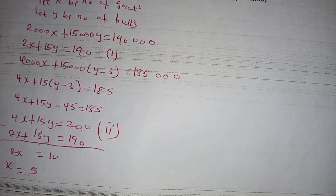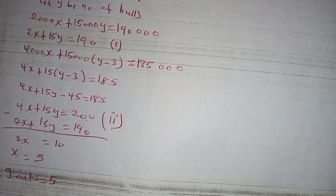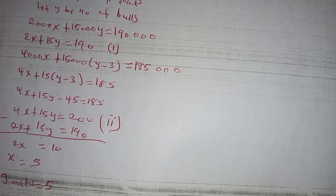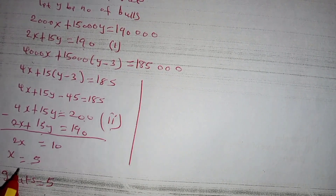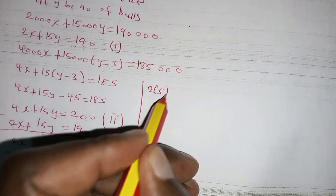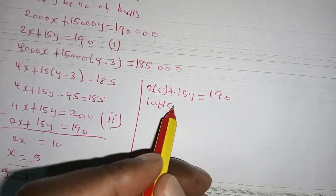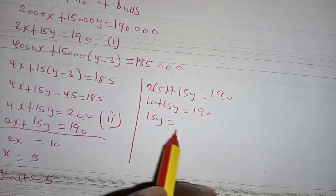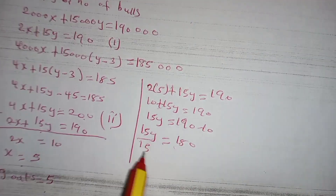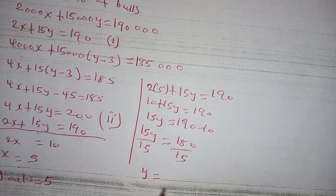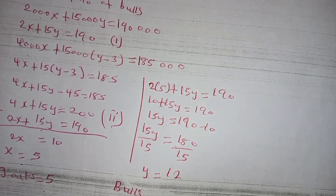Dividing both sides by two, we get x = 5, meaning the number of goats bought is five. To find y, we substitute x = 5 into equation one: 2(5) + 15y = 190, giving 10 + 15y = 190, so 15y = 180. Dividing both sides by 15, y = 12, meaning the number of bulls bought is twelve.